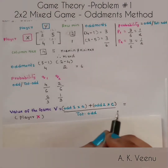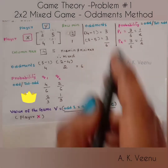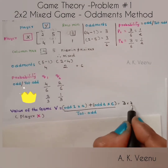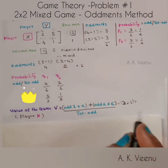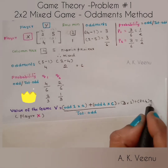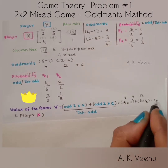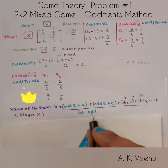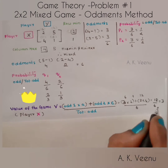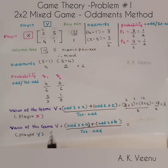The next important step is to find the value of the game V. The formula is: oddment 1 (which is 3) times A (which is 2), plus oddment 2 (which is 3) times C (which is 4). That is 6 plus 12 equals 18, divided by the total oddment 6, giving V equals 3. That is the value of the game for player X.